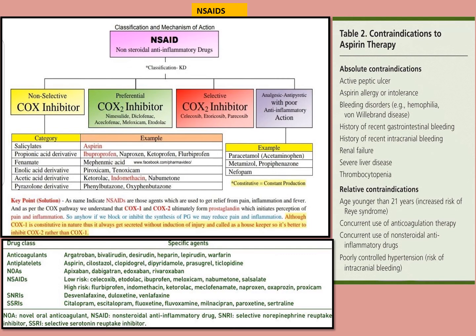NSAIDs — non-steroidal anti-inflammatory drugs — include non-selective COX inhibitors that block both COX-1 and COX-2, reducing inflammation and prostaglandin synthesis. Some drugs are selective COX inhibitors like celecoxib and rofecoxib. The salicylate group includes aspirin; ibuprofen and naproxen come under the propionic acid derivative group; mefenamic acid, piroxicam, ketorolac, and indomethacin are acetic acid derivatives. Drugs with poor anti-inflammatory effect like Tylenol or paracetamol are a different class.